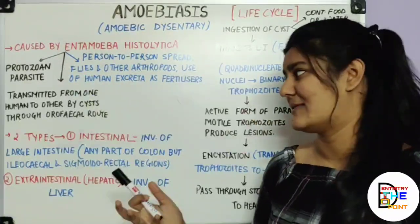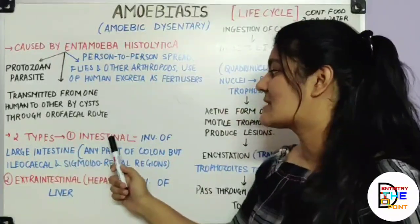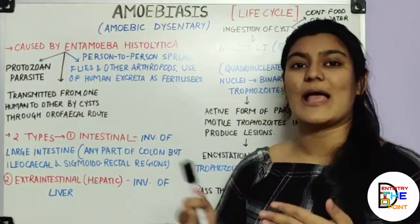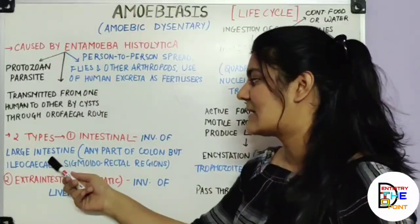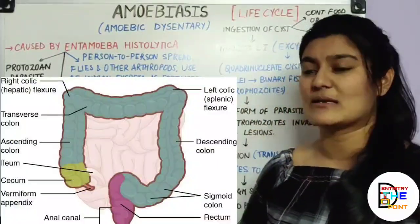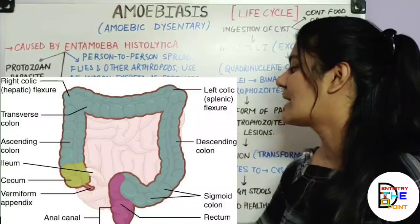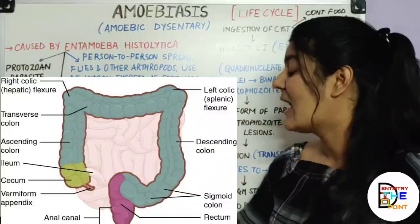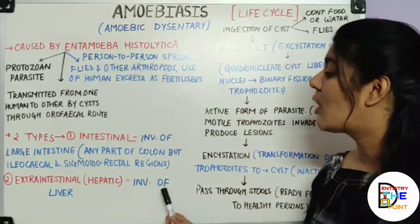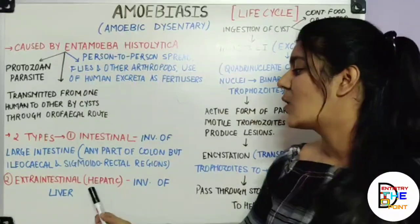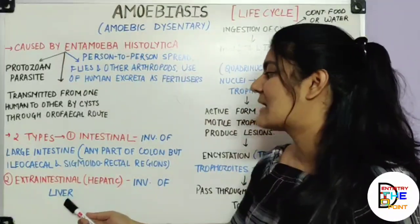Amoebiasis is of two types: intestinal and extra-intestinal. Intestinal amoebiasis involves any part of the large intestine or colon, with the ileocecal and sigmoidorectal regions being most commonly involved. Extra-intestinal or hepatic amoebiasis involves the liver — when amoebiasis spreads to involve liver cells, it is known as extra-intestinal amoebiasis.